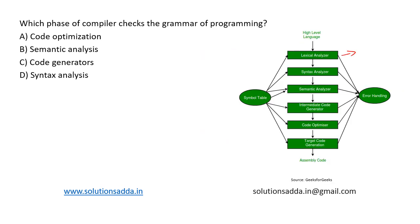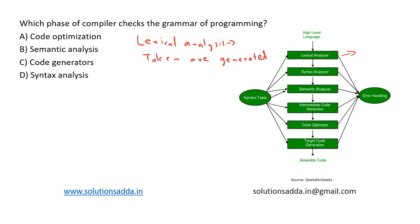In the first phase, the source code is read and broken into a stream of tokens, which are the basic units of the programming language. These tokens are passed into the second stage. So in the first stage — lexical analysis — tokens are generated.